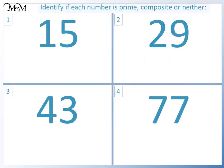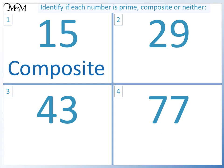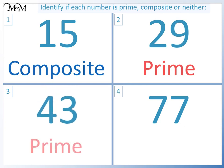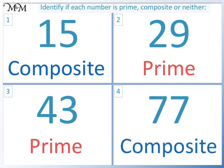Here are some questions for you to try. Identify whether each number is prime, composite, or neither. Pause the video and have a go. Question 1: 15 is 3 times 5, it is composite. Question 2: 29 is prime. Question 3: 43 is prime. Question 4: 77 is 7 times 11, so it is composite.